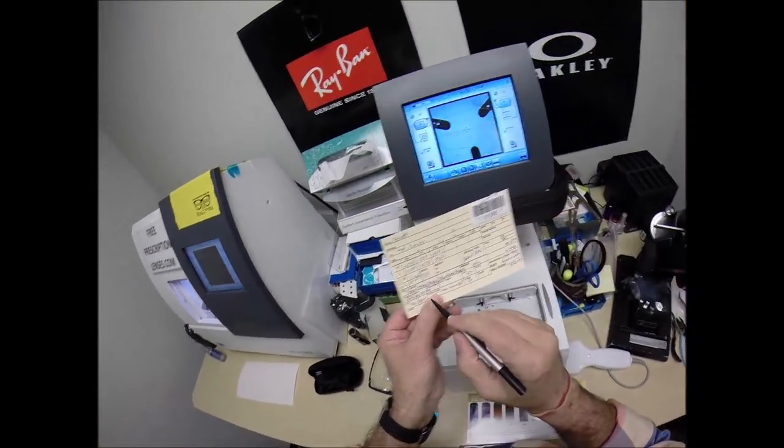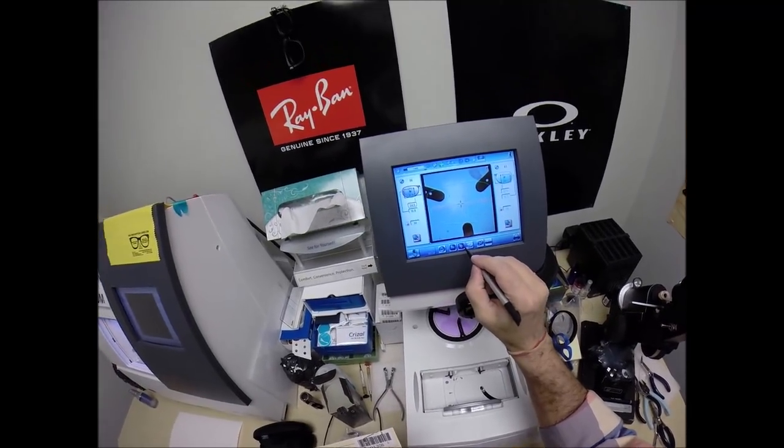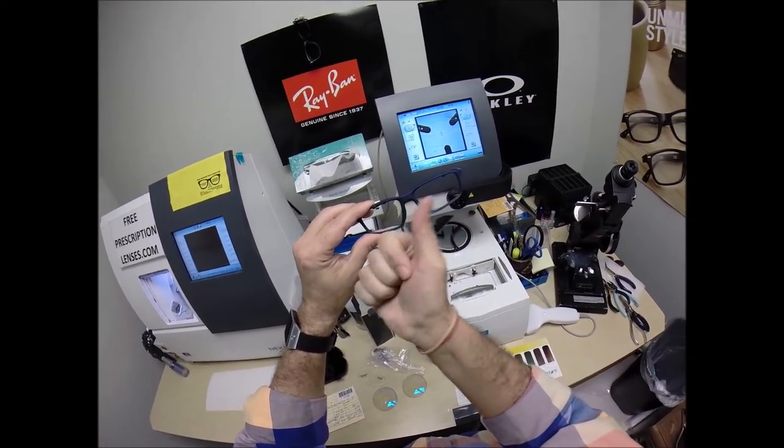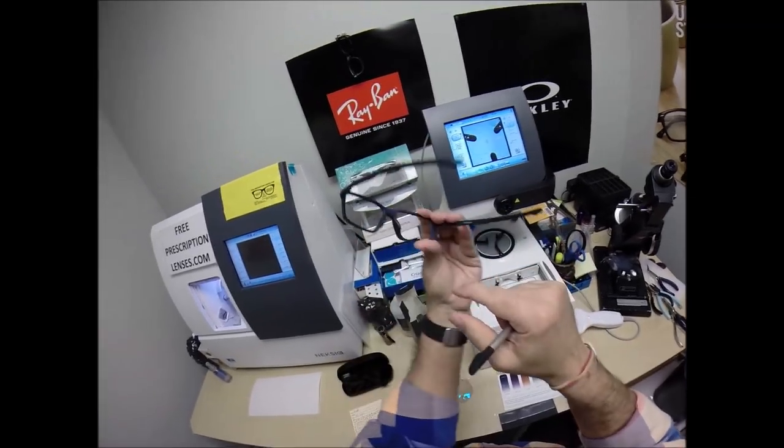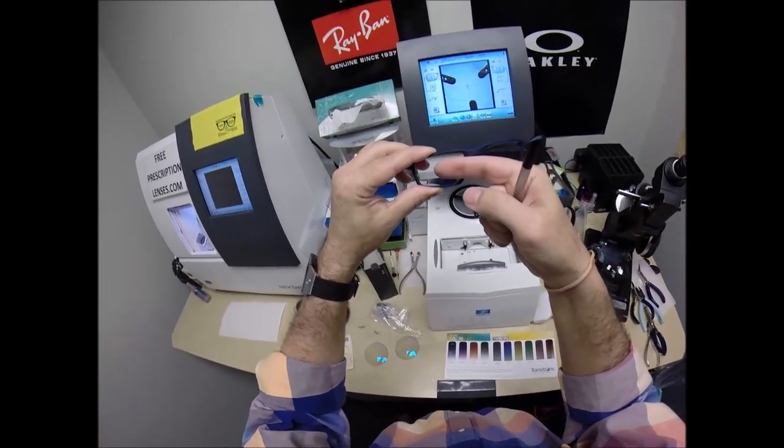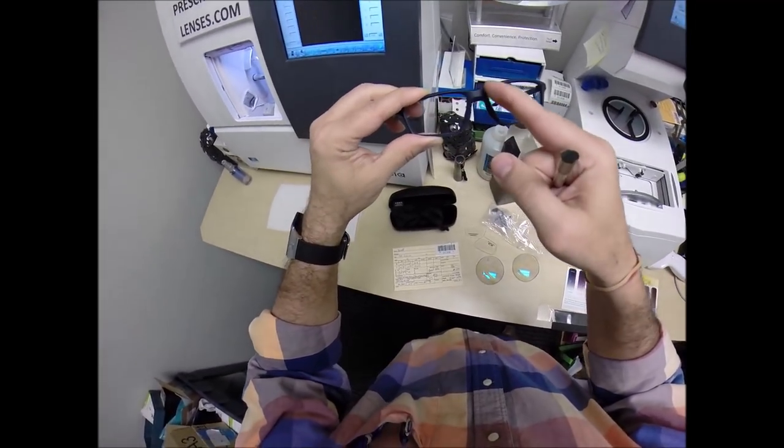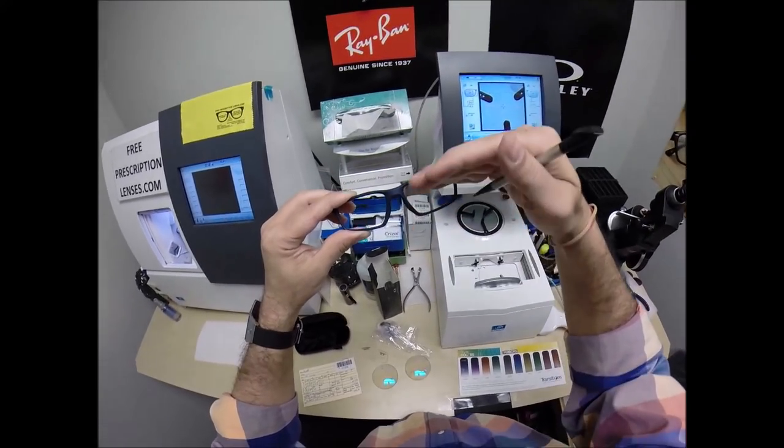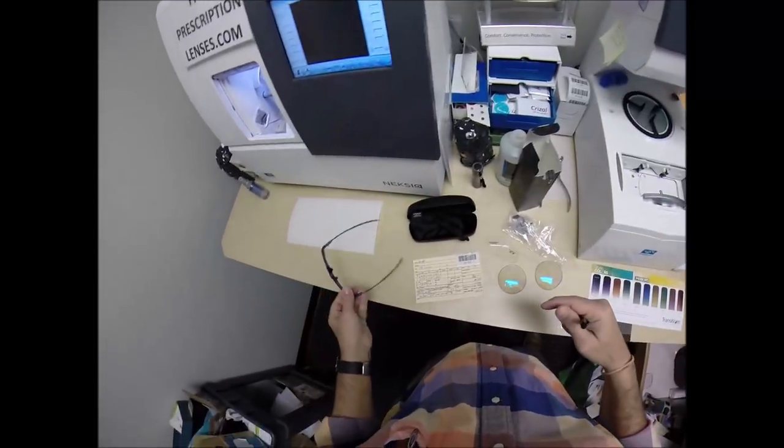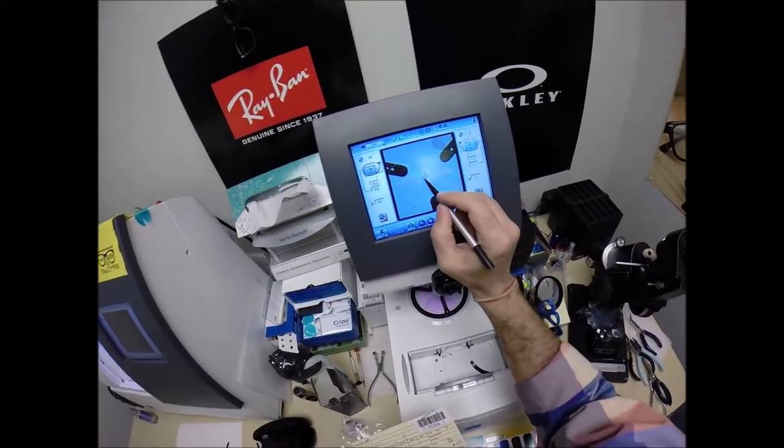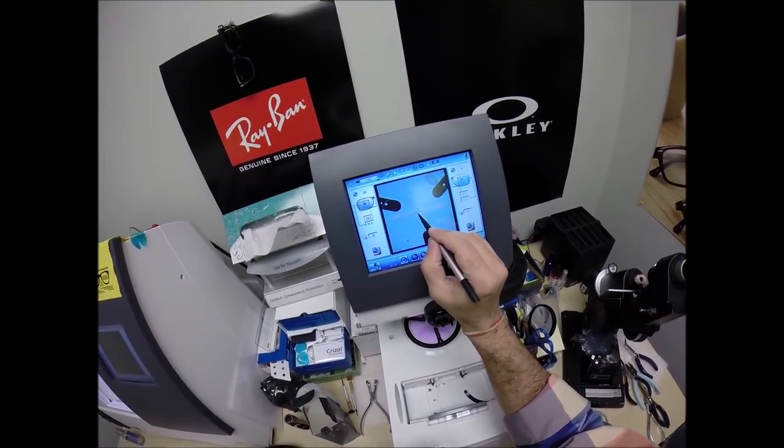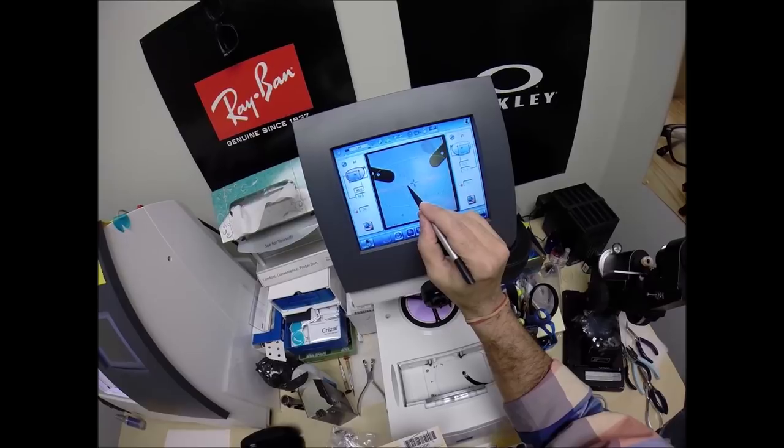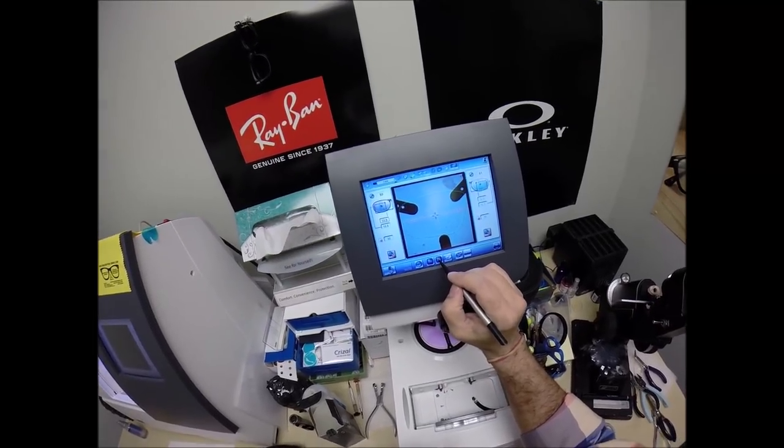That is the shape of the lens I'll be cutting. Your pupillary distance is 34. The pupillary distance is the width of your eyes in relation to the bridge. You are 34 millimeters on your right lens and 33.5 millimeters on your left. This blue crosses the geometric center of your frame.